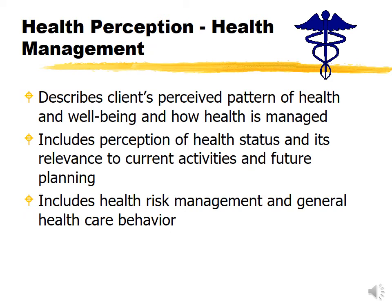We're going to go through and describe each pattern. The first one is health perception, health management. It might be helpful to print a copy of the functional health pattern from Blackboard under clinical documents before continuing. The first pattern — health perception, health management — is how the client perceives their health, how healthy they perceive themselves to be, how they manage their health, what activities they currently do, what they're planning for the future, health risk management, and general health care behavior.